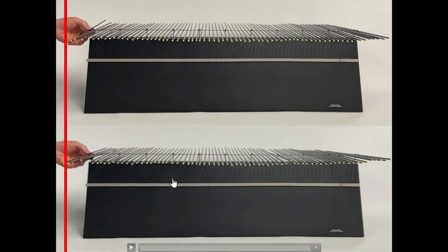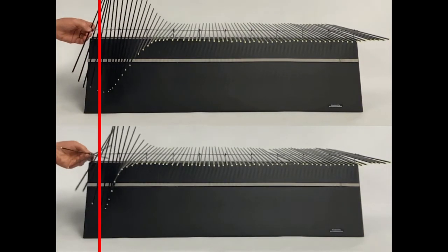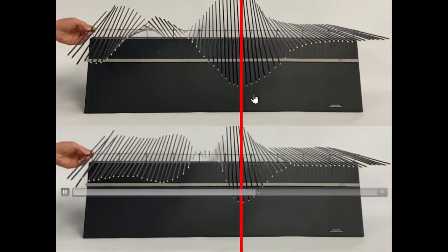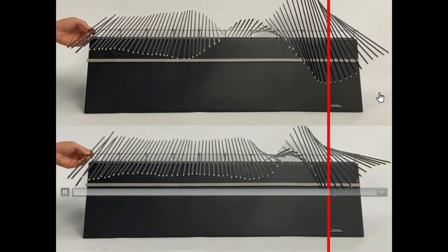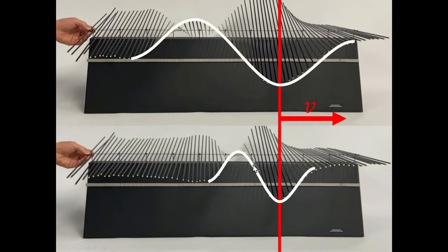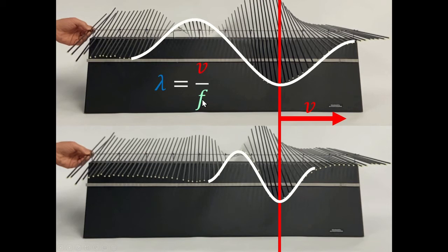One interesting thing about waves is that regardless of wavelength or frequency, they will travel at the same speed on the same medium. Two waves — one with a very short wavelength and one with a much longer wavelength — travel at exactly the same speed. As long as they're on a particular medium, all those waves travel at the same velocity. So changing the frequency would not change the velocity; changing the frequency would change the wavelength.